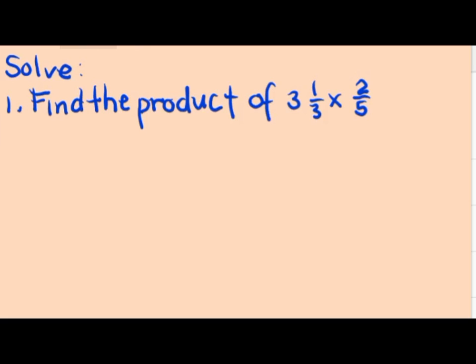So to find the product of 3 and 1/3 multiplied by 2/5, we have to write first 3 and 1/3 multiplied by 2/5.